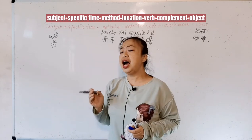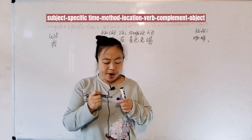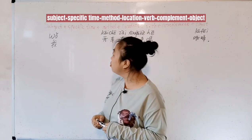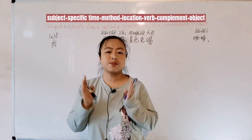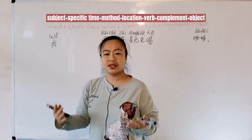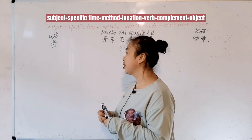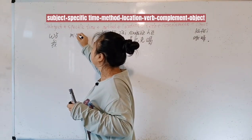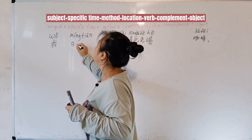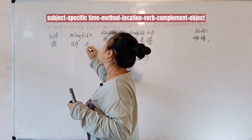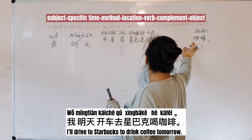If I want to say 'I'll drive to Starbucks to drink coffee tomorrow', where do we put 'tomorrow'? Tomorrow goes in the specific time slot, because it is a time point — like today, yesterday, tomorrow, five o'clock, or a specific year. Tomorrow is míngtiān. So the sentence becomes: wǒ míngtiān kāi chē qù xīnbākè hē kāfēi.